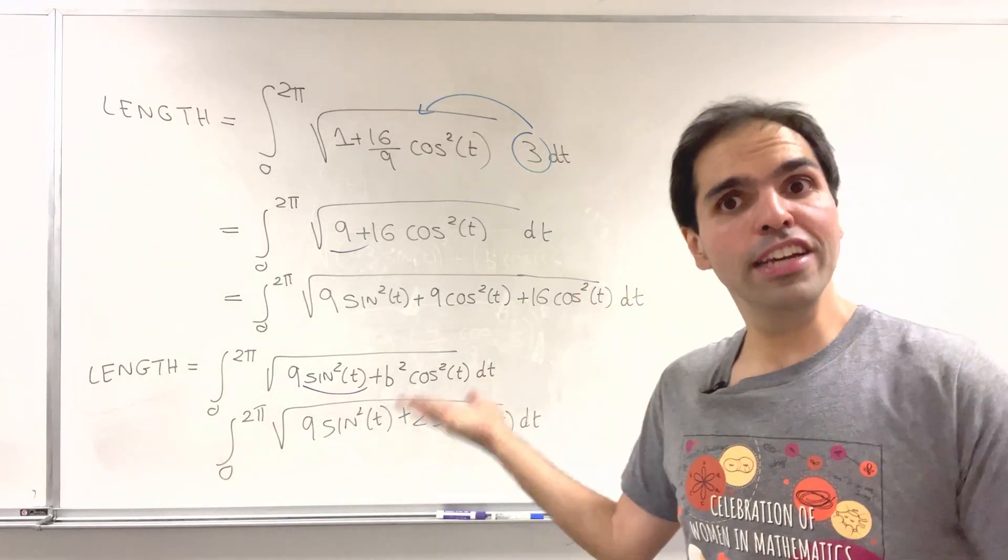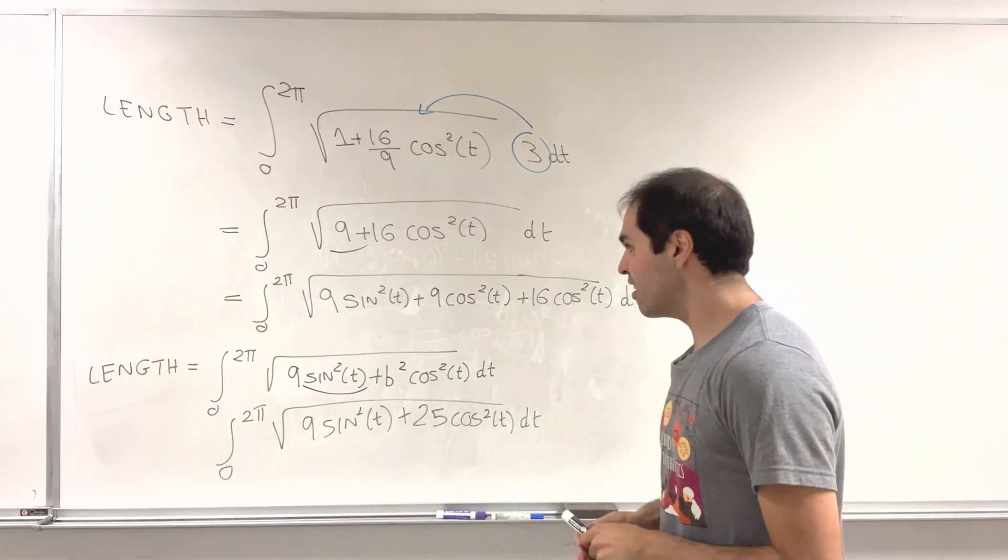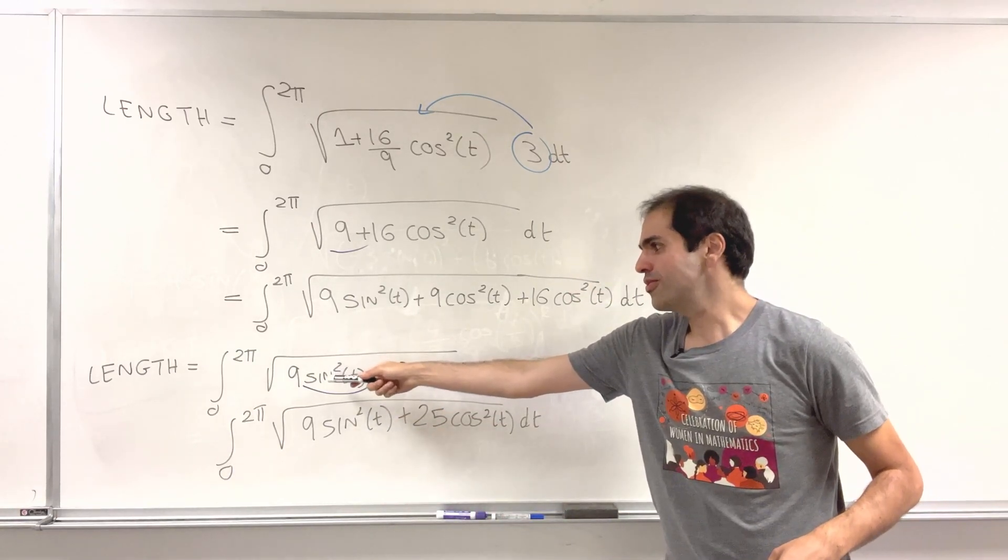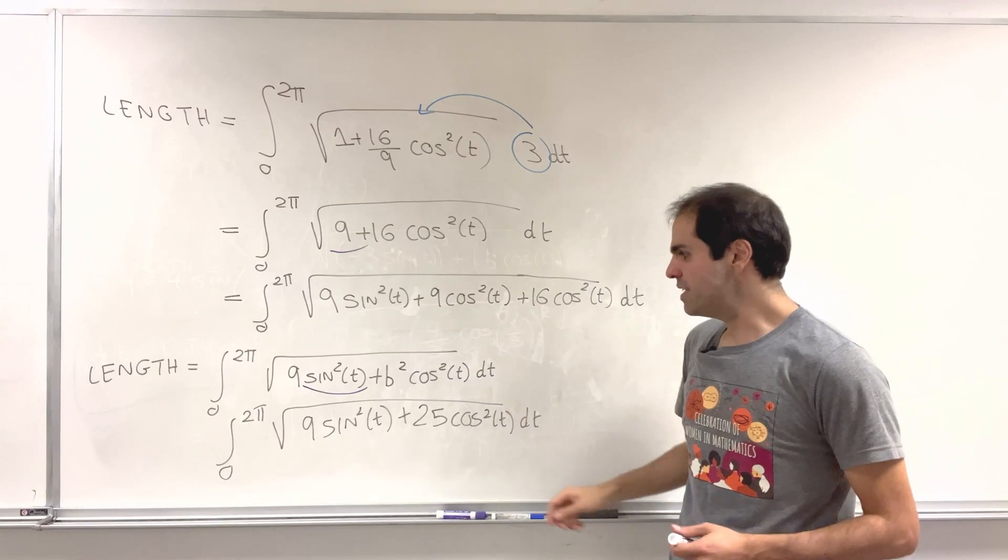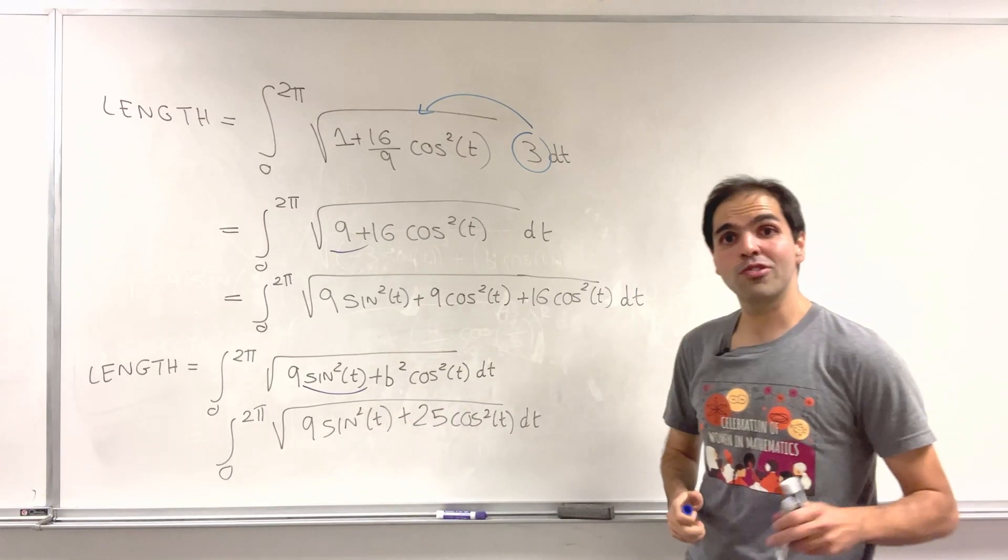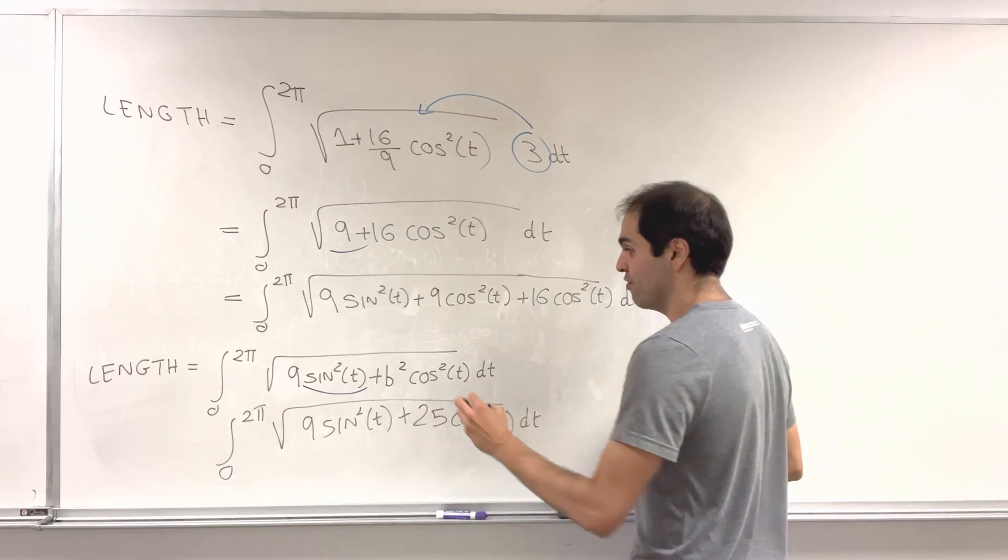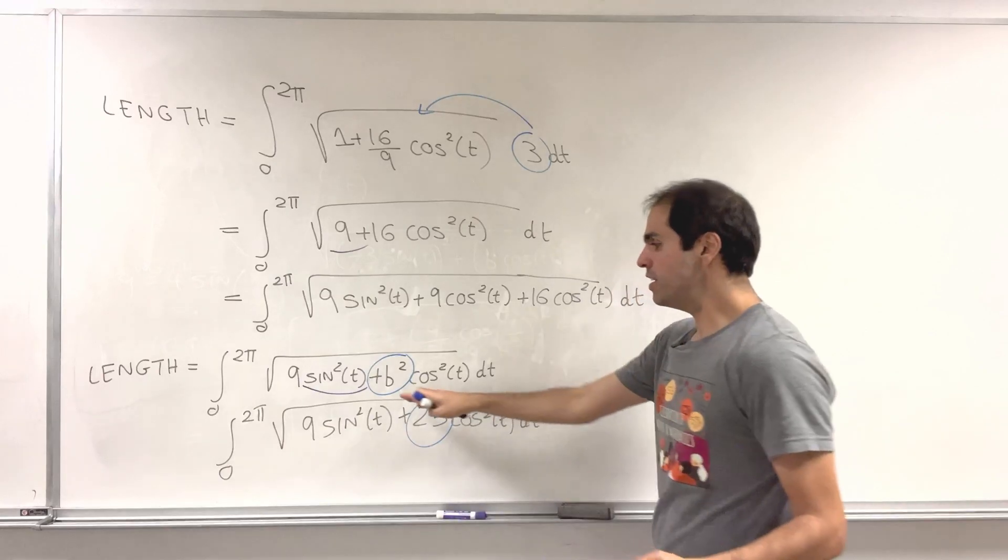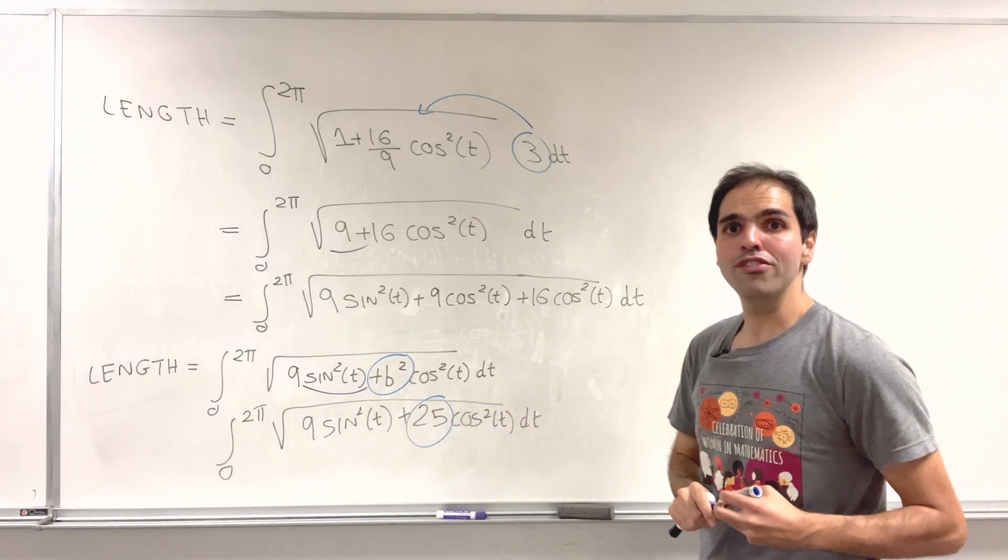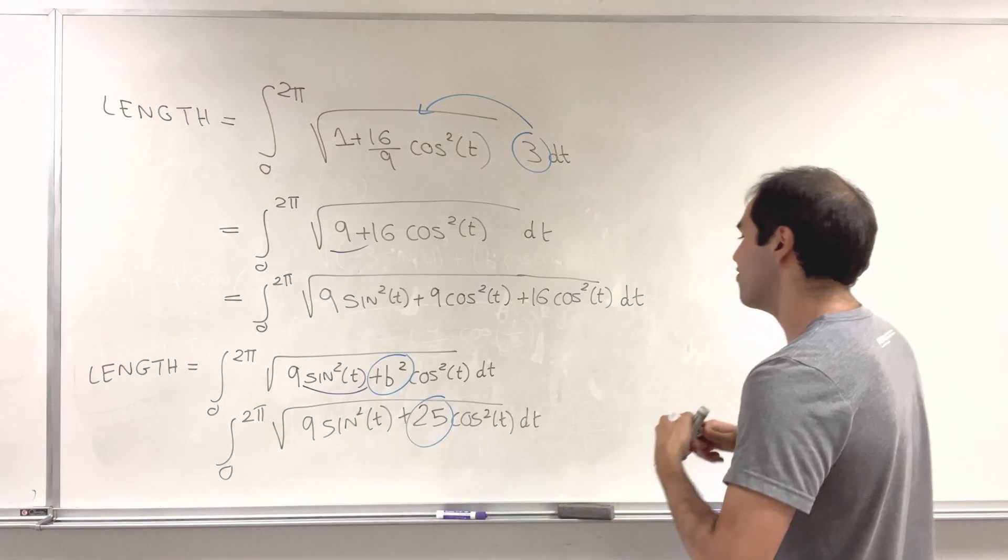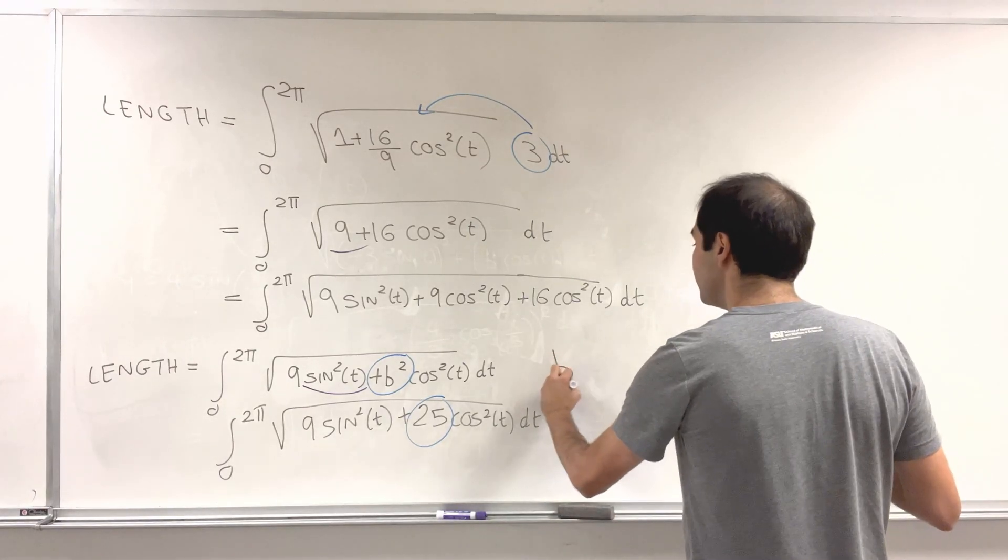We now get 2 different ways of calculating the arc. On the one hand, square root of 9 sine squared plus b squared cosine squared. On the other hand, 9 sine squared plus 25 cosine squared. And well, all we need to do is compare those coefficients, and we get that b squared equals 25, and indeed, b equals 5.